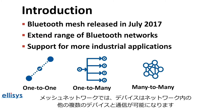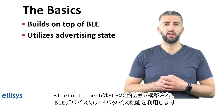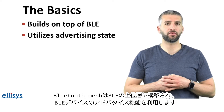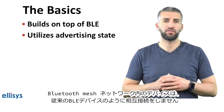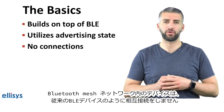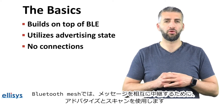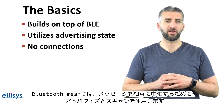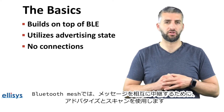In a mesh network, devices can set up connections with multiple other devices within the network. Bluetooth Mesh builds on top of BLE and specifically utilizes the advertising state of BLE devices. Devices within a Bluetooth Mesh network do not connect to each other like traditional BLE devices do; rather they use the advertising and scanning states in order to relay messages to each other.